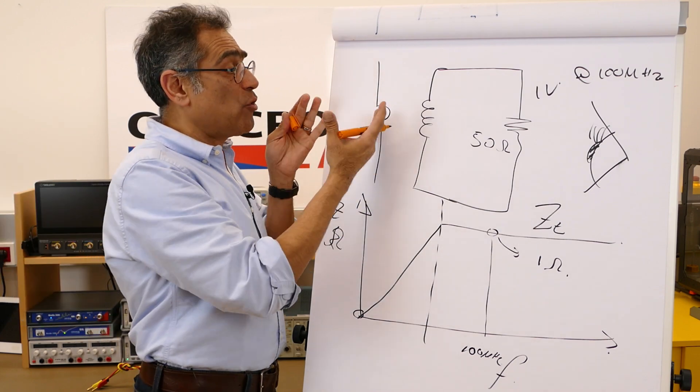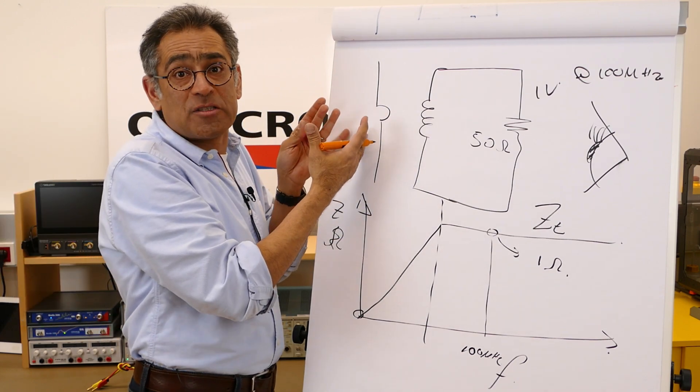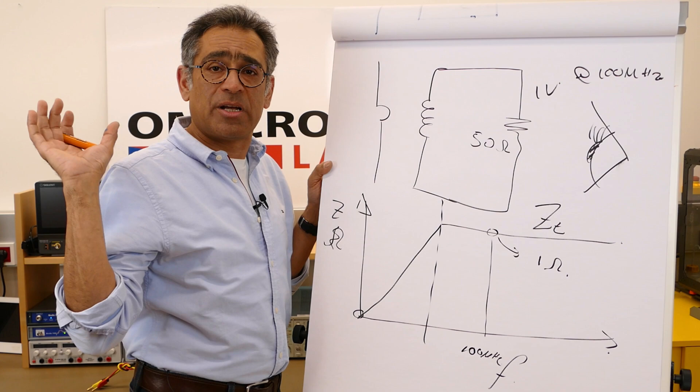And then you use another equation which estimates what the field is that the antenna is going to pick up if you have 1 amp at 100 megahertz flowing, and we're going to show that a little bit when we go to the lab.